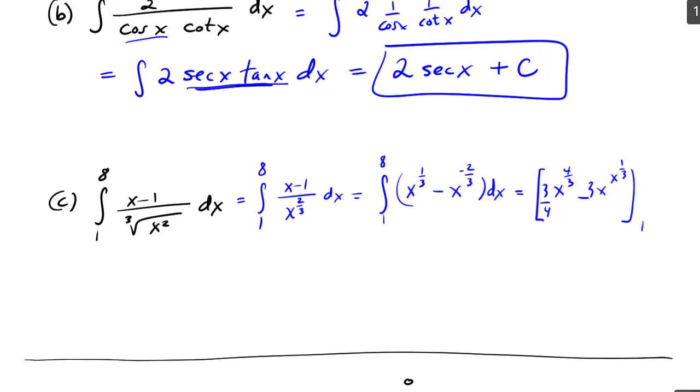from 1 to 8. Okay, so now I do the evaluation. So I do this whole thing at 8 minus this whole thing at 1. So I have 3/4 times 8 to the 4/3 minus 3 times 8 to the 1/3, all minus 3/4